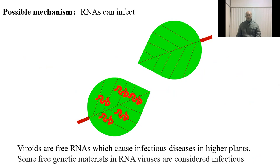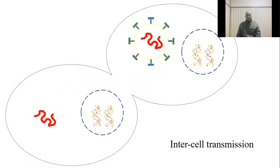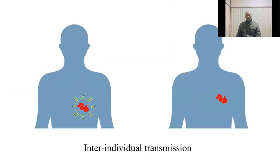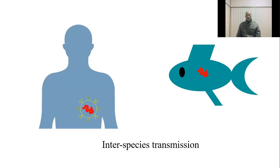Viral RNA can also enter the cell through natural cell channels. Viral RNA can directly infect plant cells. Some studies report that some free genetic material in some RNA viruses are considered infectious, although the possibility is very low. So all these indicate that RNAs in viral RNA may be infectious — they can transmit from one cell to another, from one individual to another, or from one species to another.